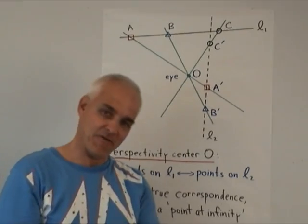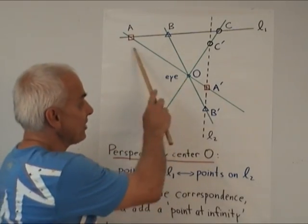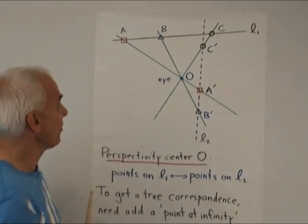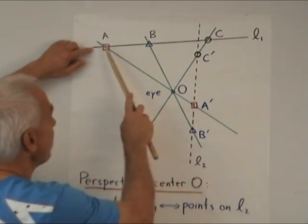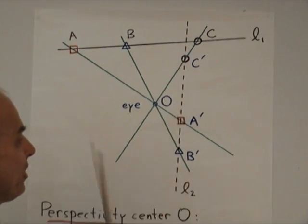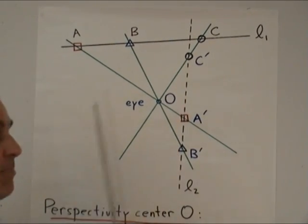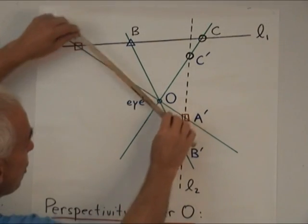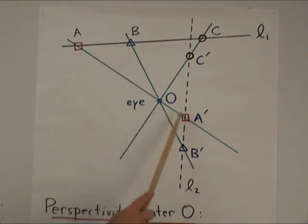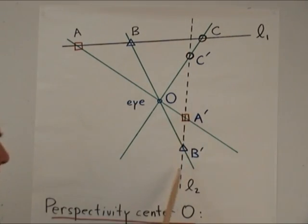This idea of a perspective even applies to two lines. So here is our perspective point, where our eye is. And here is one line L1 with three points A, B, and C on it. And here's another line L2 with points A', B', and C' on it. And since these points are corresponding via lines through the O, we say that this is a perspectivity between the line L1 and the line L2.